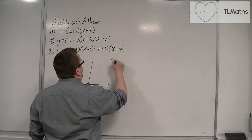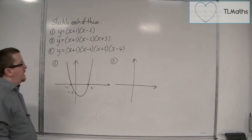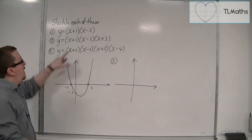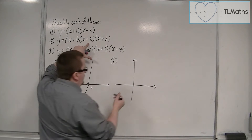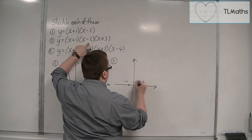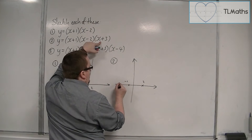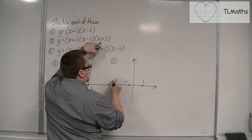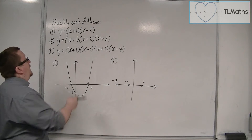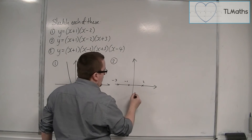With the second one, we've got a cubic, so we've got (x+1)(x-2)(x+3). We've got -1 and 2 again, but we've also got -3 coming from that bracket, so -3 would be over here. It's crossing through the y-axis at 1 times -2 times 3, so -6, and that's down here.